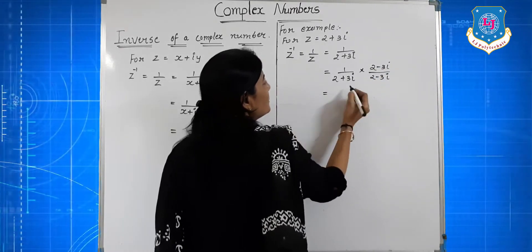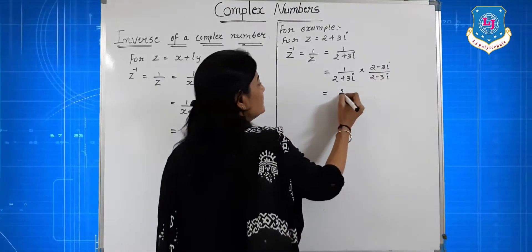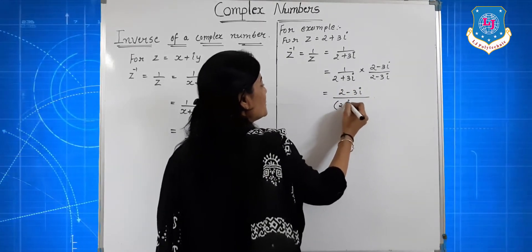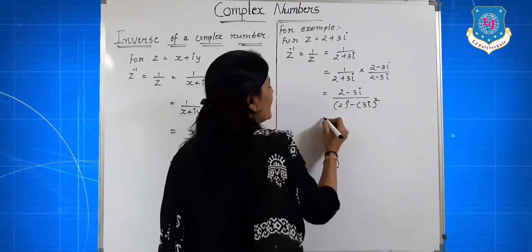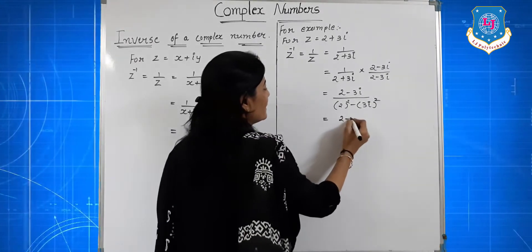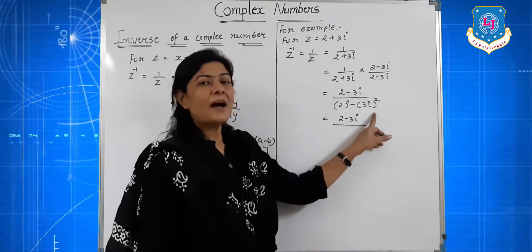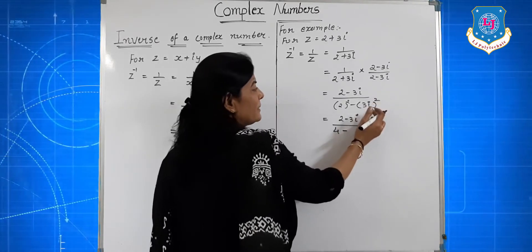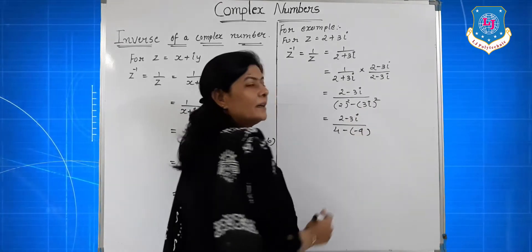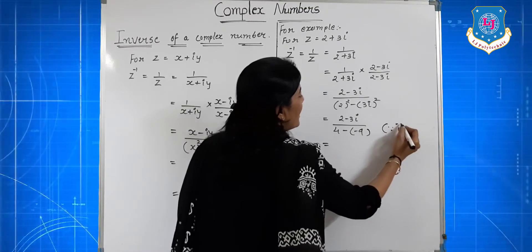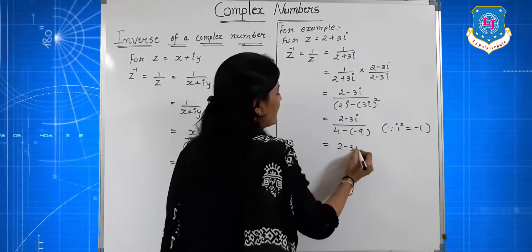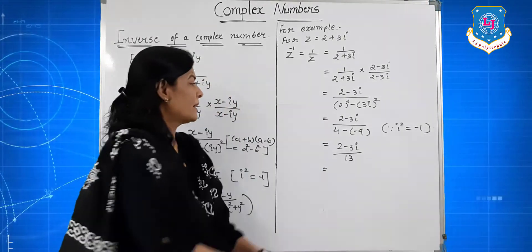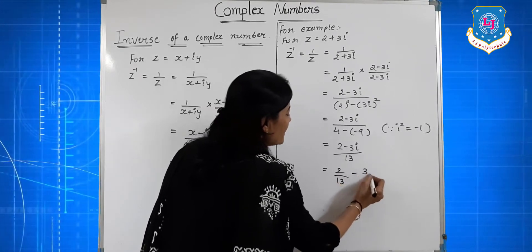This gives 2 minus 3i upon the denominator. The value of i square is minus 1, so 4 minus i square times 9 becomes 4 plus 9 equals 13. Therefore z inverse equals 2 minus 3i upon 13. Written in x plus iy form, this is 2 upon 13 minus 3 upon 13 i.